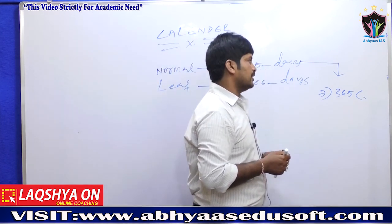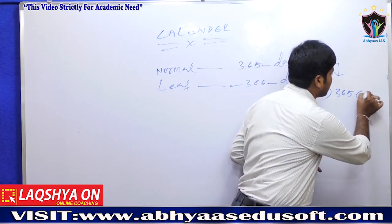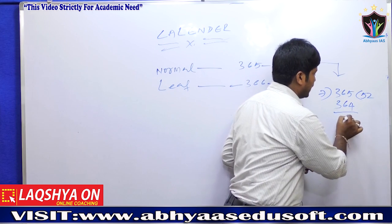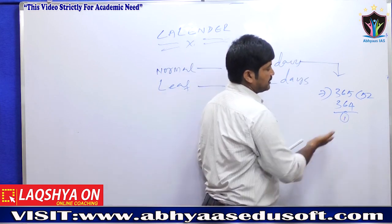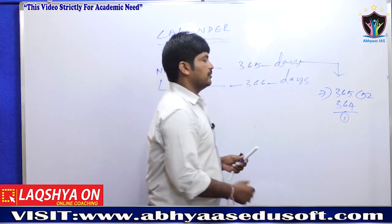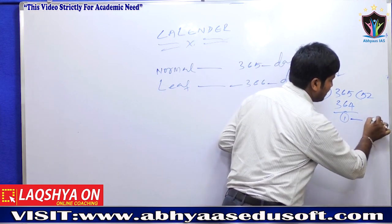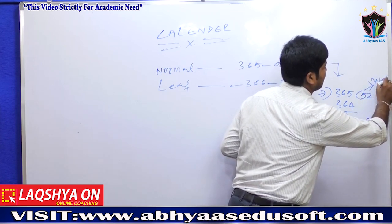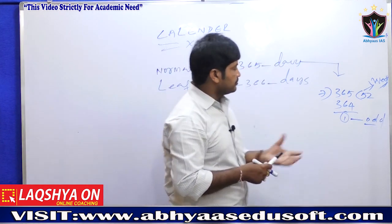When we divide 365 by 7, we get 52 weeks and a remainder of 1. That remainder of 1 is called the odd day. So a normal year has 52 complete weeks and 1 odd day.